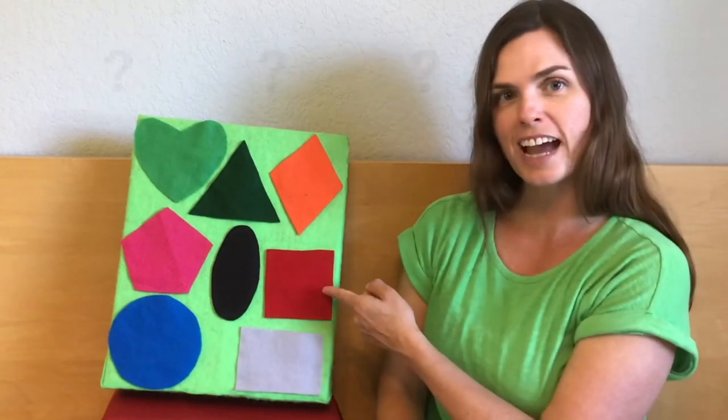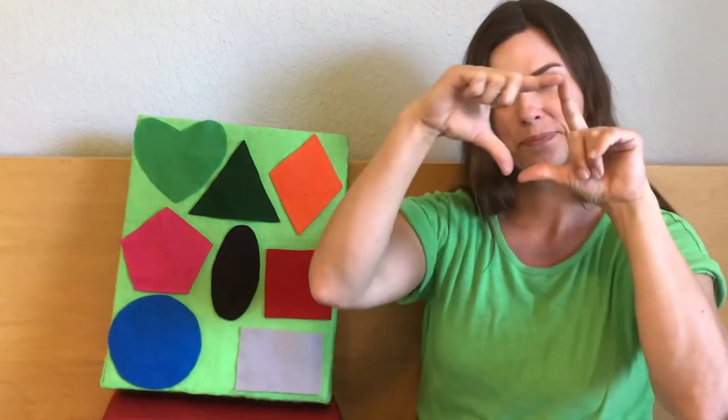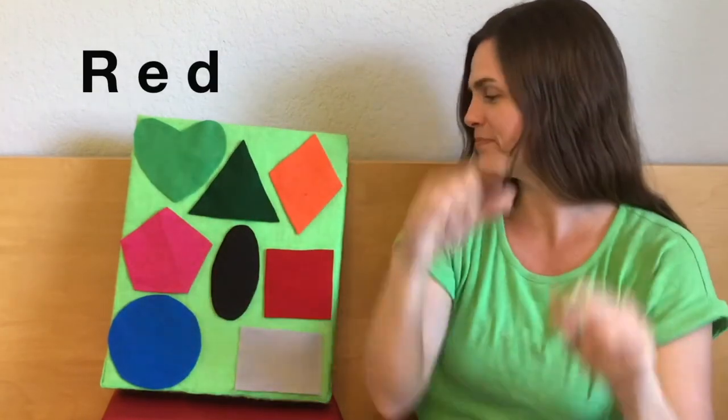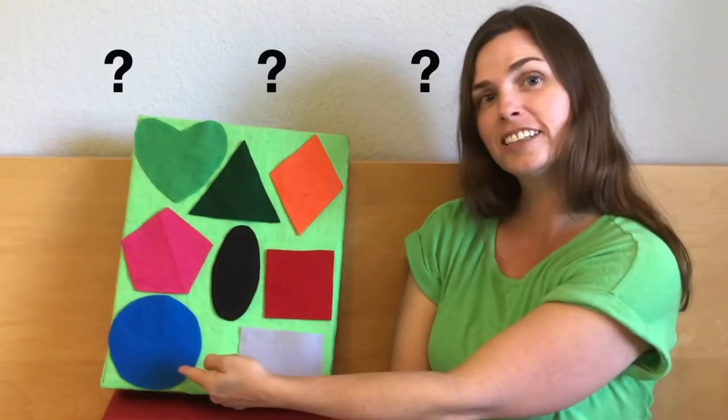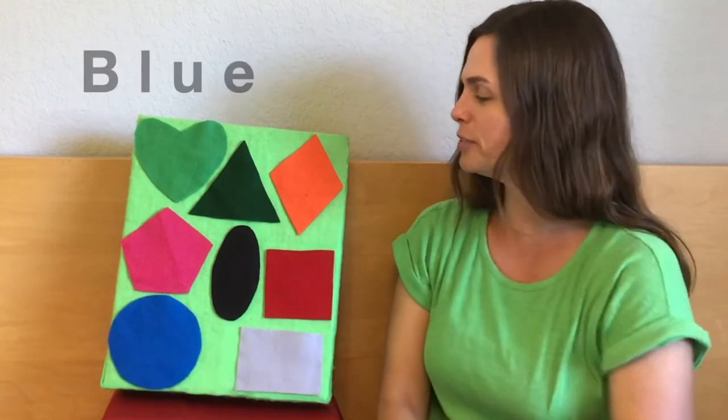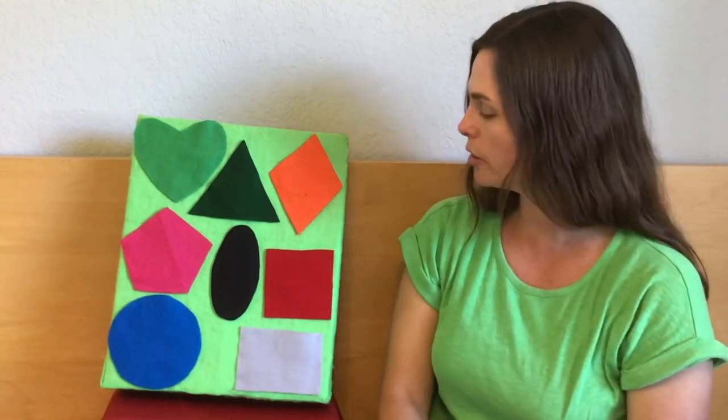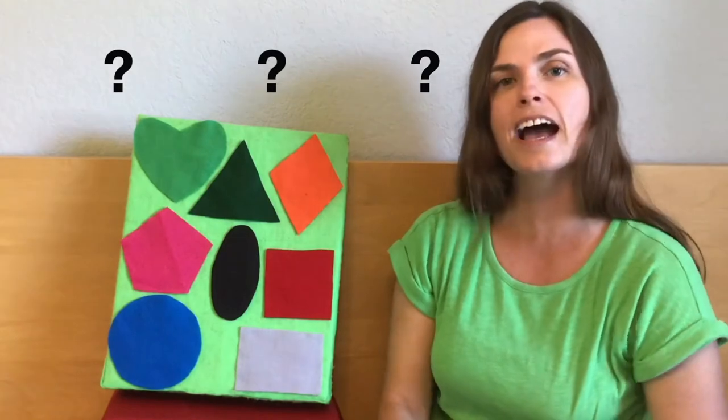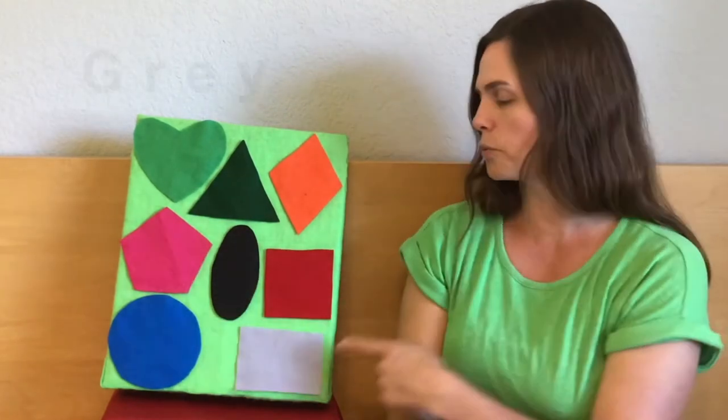How about this guy? Red square. Remember here? Blue circle. You said blue circle, you're right. And finally we have gray rectangle.